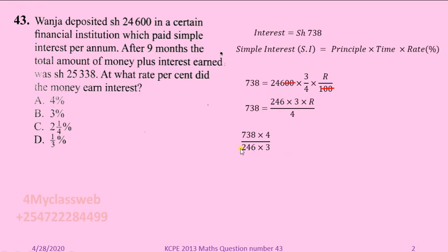To get the rate, I have taken the reciprocal: the number on top has been made the denominator and the denominator has been made the numerator. On the right side, we have 738 × 4, divided by 246 × 3. You then find that 738 can be divided by 738, cancelling out, and you are left with 4. Therefore the rate is 4 percent.